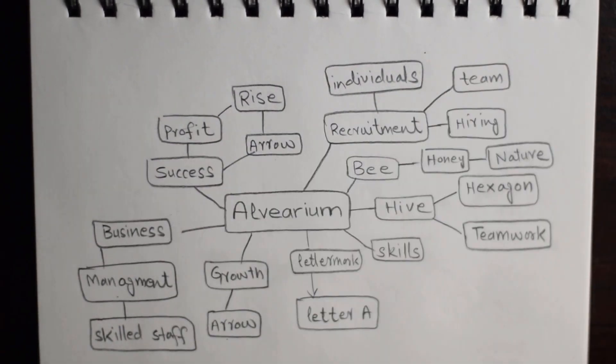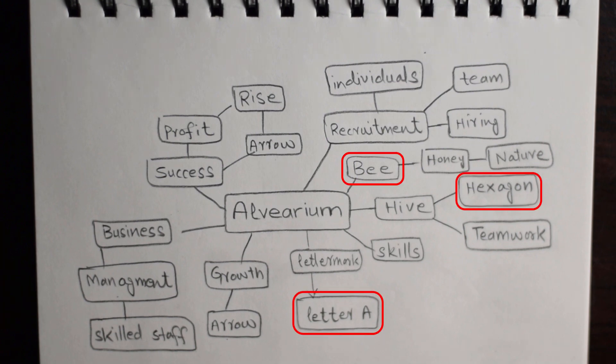My major focus is on the points like the initial letter A, a honeybee, and a hexagon. The initial letter A represents the brand name, the honeybee represents an individual with a specific job and complete understanding of their role, and the hexagonal design resembles the beehive.